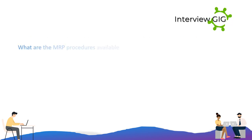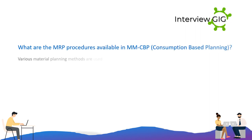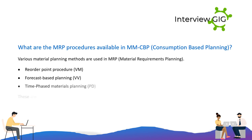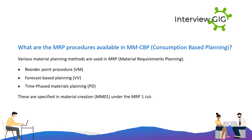What are the MRP procedures available in CBP (consumption-based planning)? Various material planning methods are used in MRP material requirements planning: Reorder Point Procedure, Forecast-Based Planning, and Time-Phased Materials Planning. These are specified in material creation under the MRP1 tab.